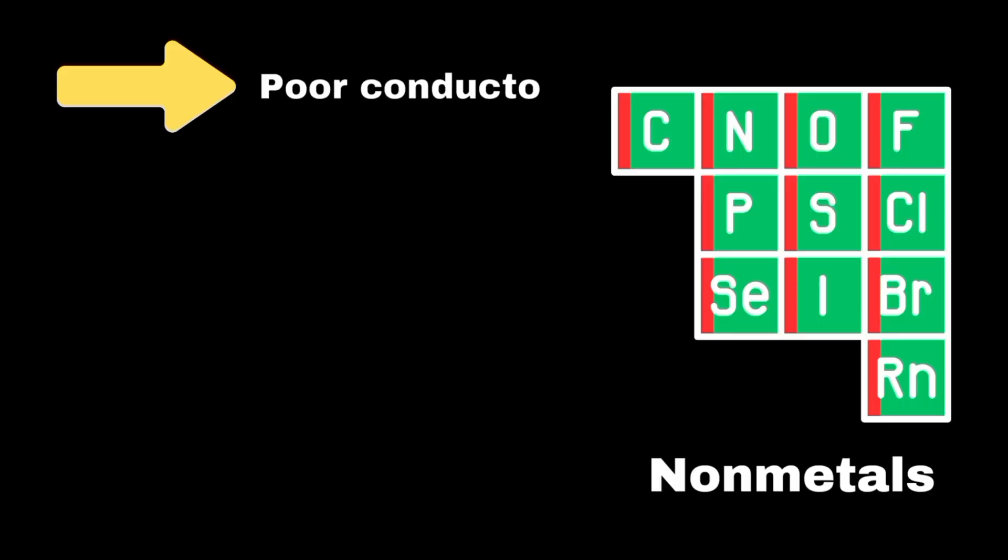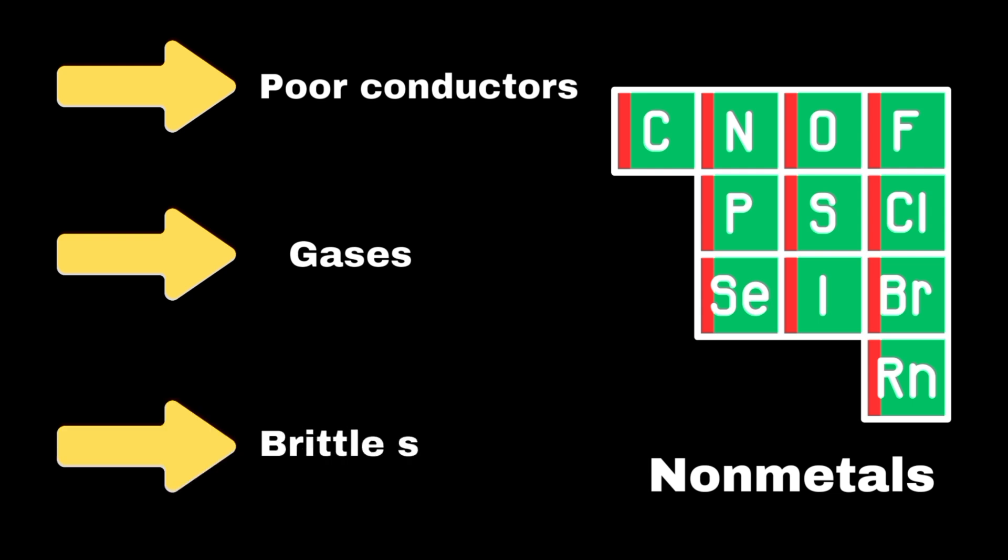Non-metals are located on the right side, are generally poor conductors of heat and electricity, and can be gases, like oxygen, or brittle solids, like sulfur.